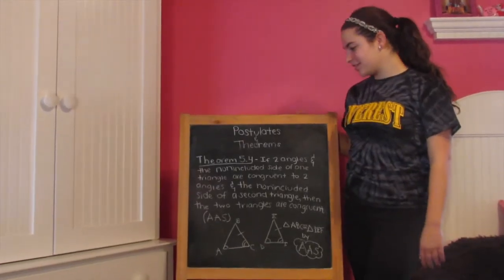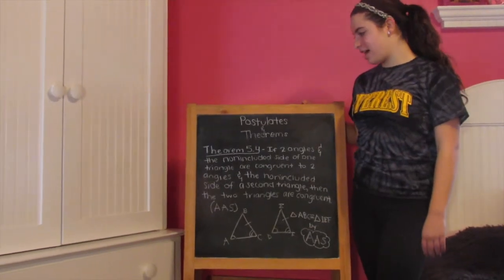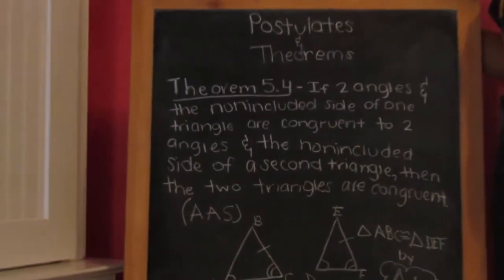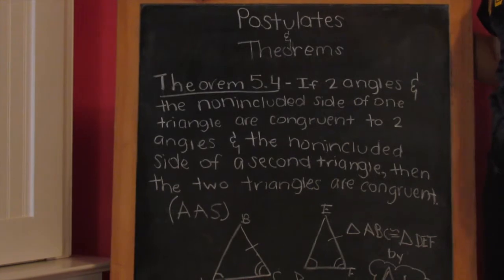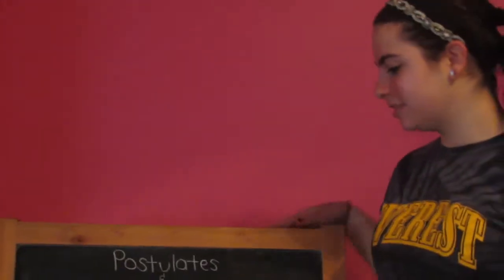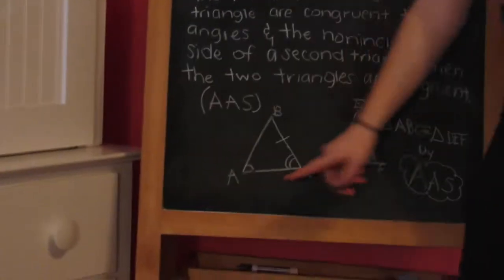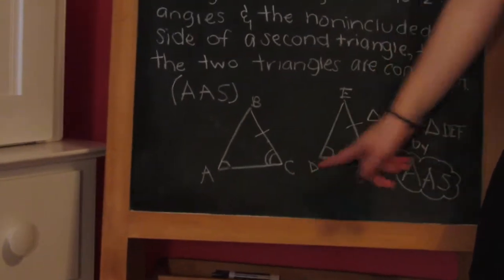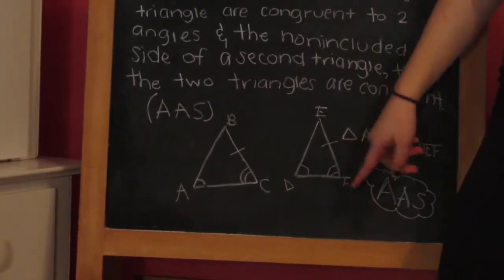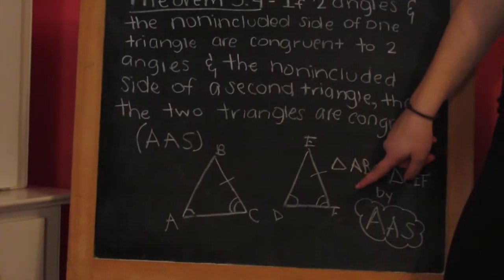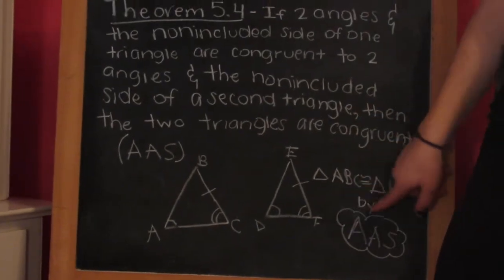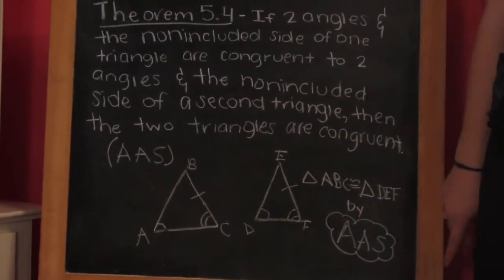Now theorem 4.5. If two angles and the non-included side of one triangle are congruent to the two angles and the non-included side of another triangle, then the two triangles are congruent. For example, angle A is congruent to angle D, and angle C is congruent to angle F. And then the non-included sides, BC, is congruent to the other non-included side, EF. So triangle ABC is congruent to DEF by AAS.